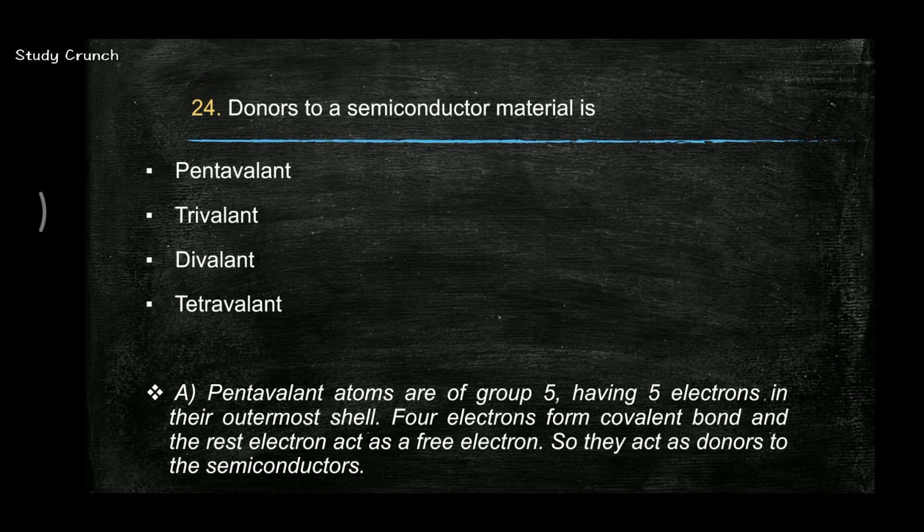Next, donors to a semiconductor material is pentavalent. Pentavalent atoms are group 5 elements having 5 electrons in the outermost shell. Four electrons form the covalent bond and the rest act as free electrons. So they act as a donor to the semiconductor.